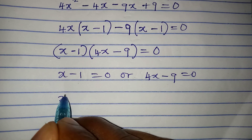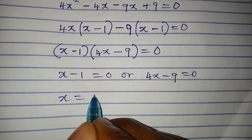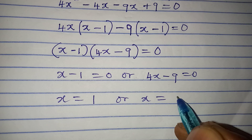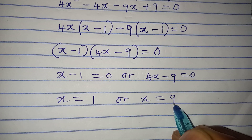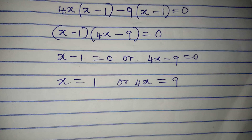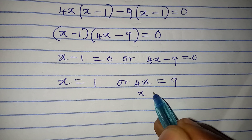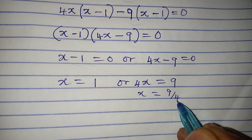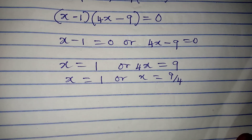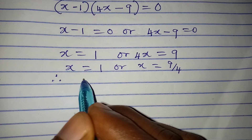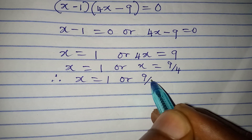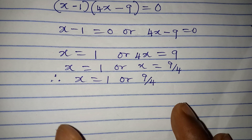Using the zero product rule, either x minus 1 equals zero, giving x equals 1, or 4x minus 9 equals zero, giving x equals 9 over 4. So x equals 1 or x equals 9 over 4. Now let's check both values.